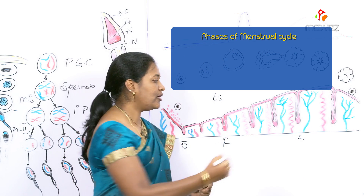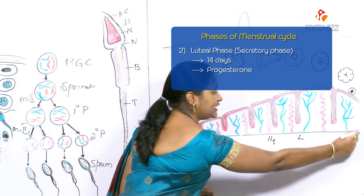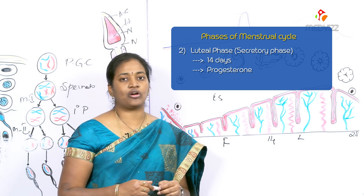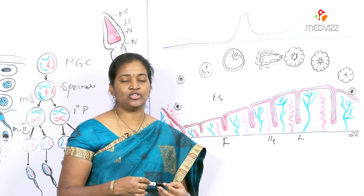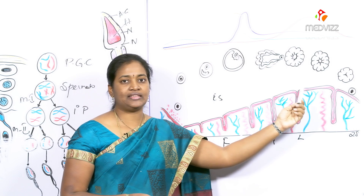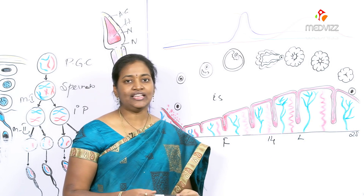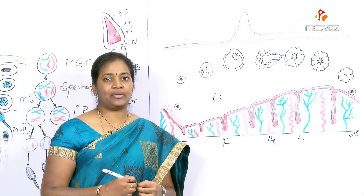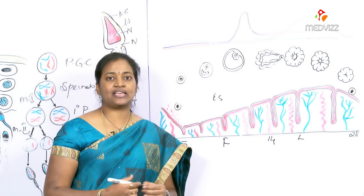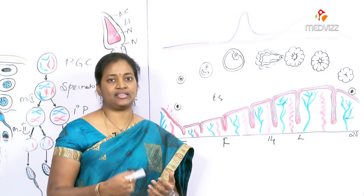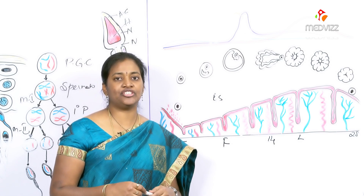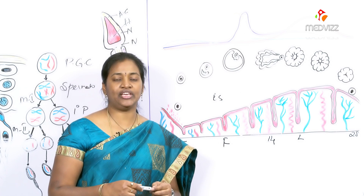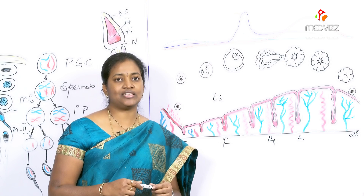The luteal phase spans from day 14 to 28 of the menstrual cycle and is dependent on the hormone progesterone, which is released from the corpus luteum. Progesterone stimulates development of the epithelium, which becomes rich in glycoprotein. The glands become tortuous and saccular, and the thickness of the endometrium increases to five to seven millimeters. As the spiral arteries grow into the superficial compact layer, they become increasingly coiled, the venous network becomes complex, large lacunae or venous spaces develop, and there is direct arteriovenous anastomosis.